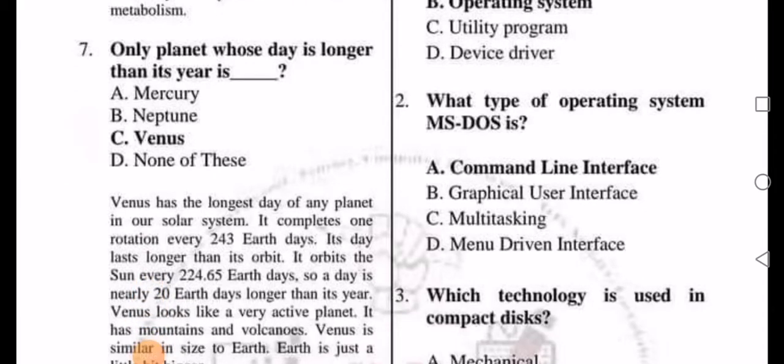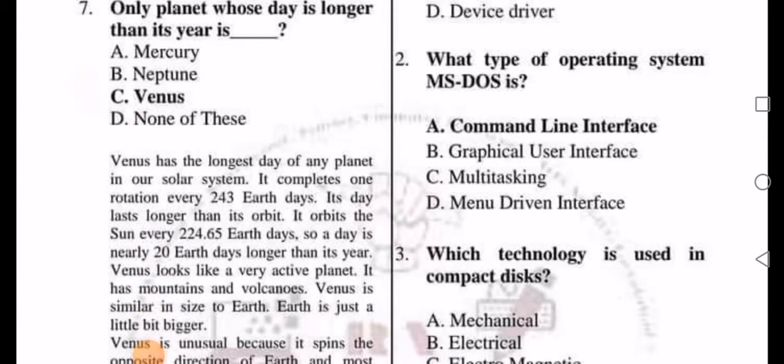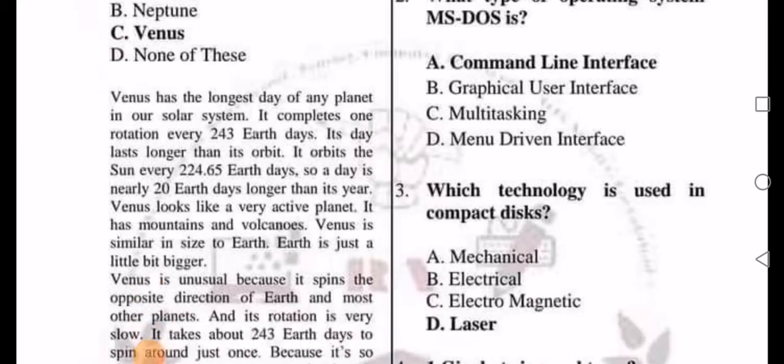What type of operating system is MS-DOS? A, command line interface. B, graphical user interface. C, multitasking. D, menu driven interface. Answer A, command line interface.